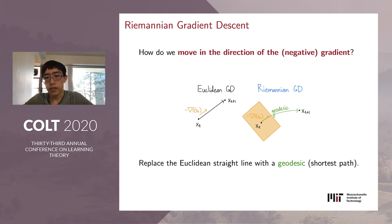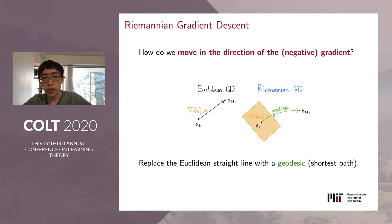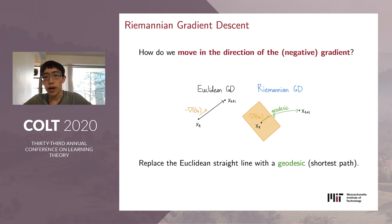Once we have a gradient, we need to understand how to travel in the direction of the negative gradient. In the Euclidean case, we travel along the straight line with velocity equal to the negative gradient. In the Riemannian setting, we replace the straight line with the geodesic which starts at our current point and travels with velocity equal to the negative gradient. This is how we perform Riemannian gradient descent. Next, we'll talk about the Riemannian structure of Wasserstein space, which allows us to carry these ideas over.